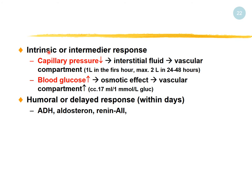The intrinsic or intermediate response happens a little later. When capillary pressure decreases, interstitial fluid returns to the vasculature — about 1 liter of auto-transfusion in the first hour, with a maximum of about 2 liters from interstitial spaces. Hyperglycemia has an osmotic effect pulling water into the vasculature, contributing about 70 mL per millimole of glucose — almost negligible.